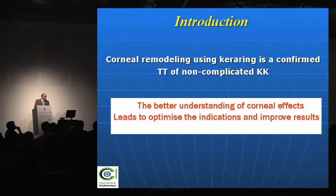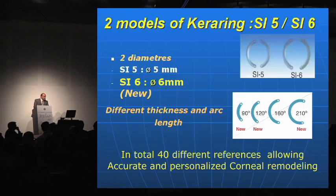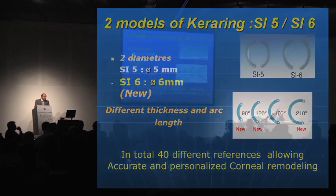Corneal remodeling using Keraring is today a confirmed treatment of non-complicated keratoconus. Basically, we have two models of Keraring — 5 and 6 mm — with different thickness and arc length. The general mechanism of action is corneal flattening, and with thicker segment and smaller diameter, we have a bigger effect.